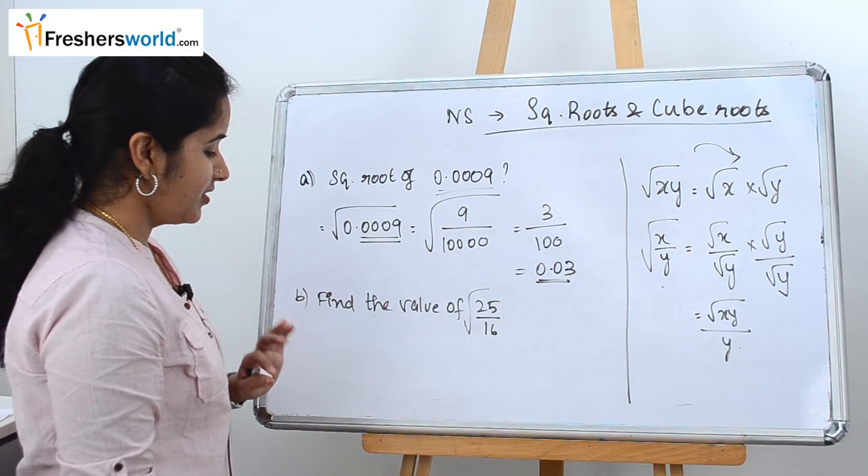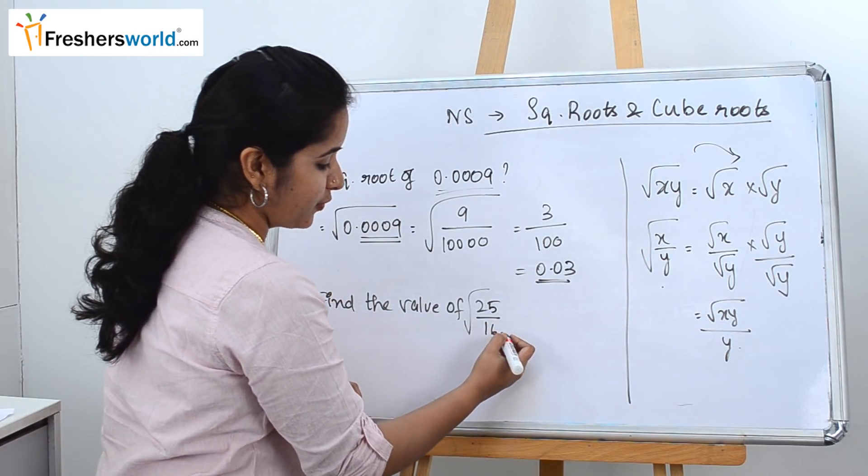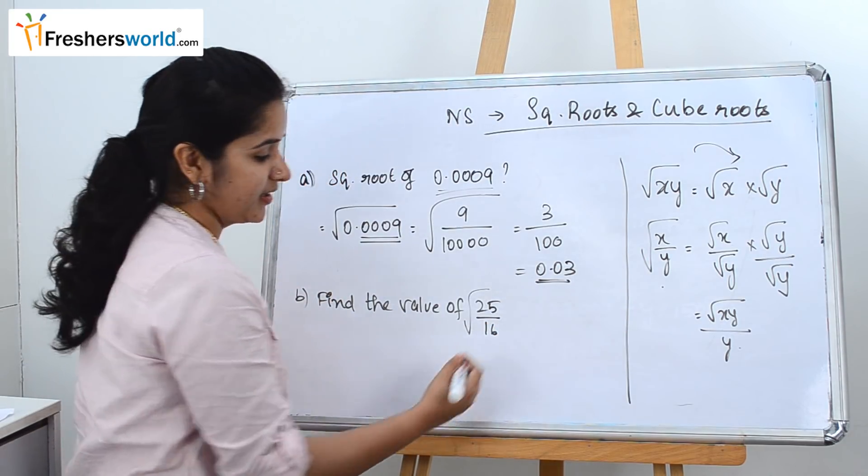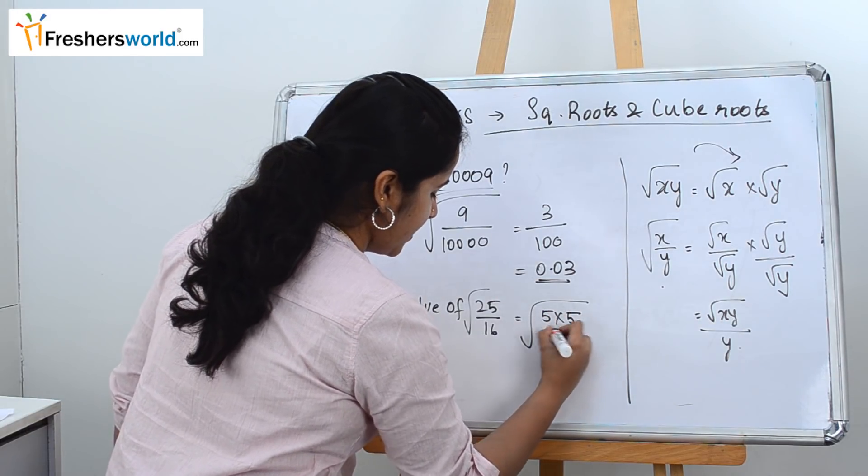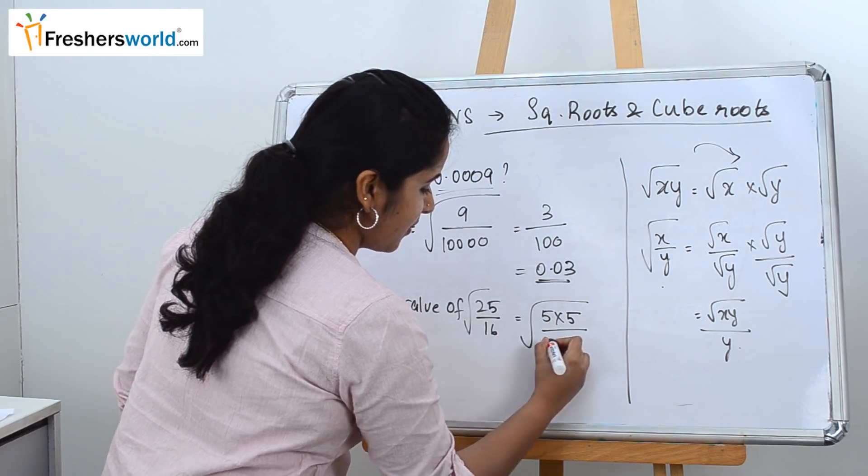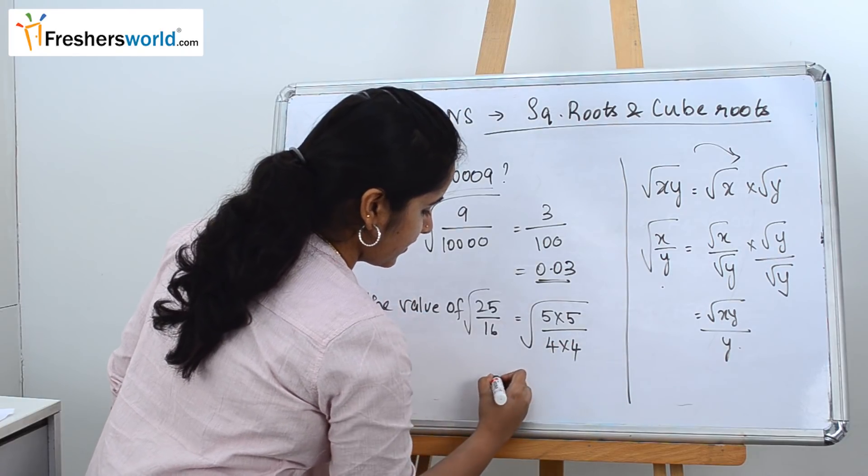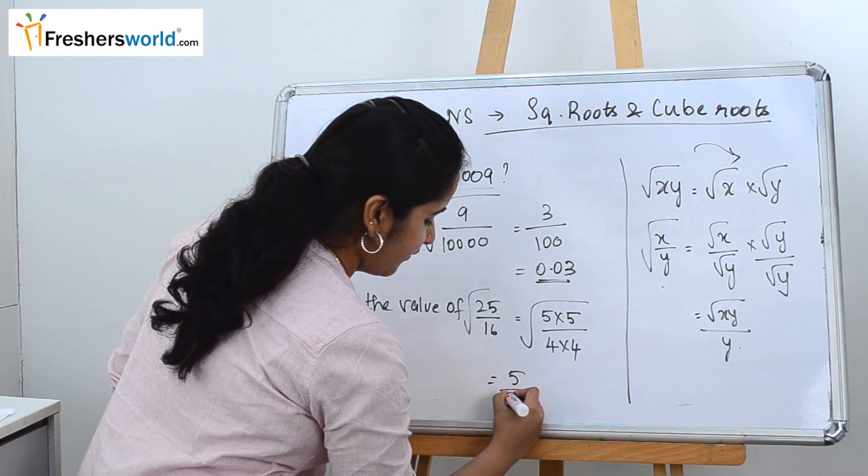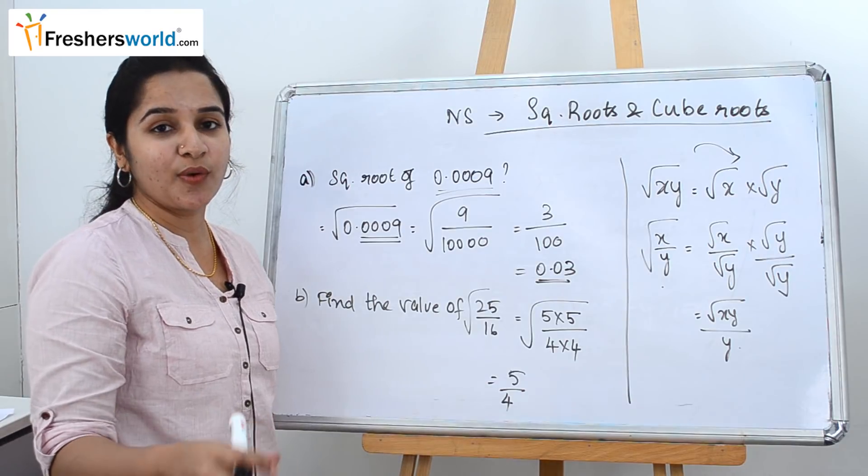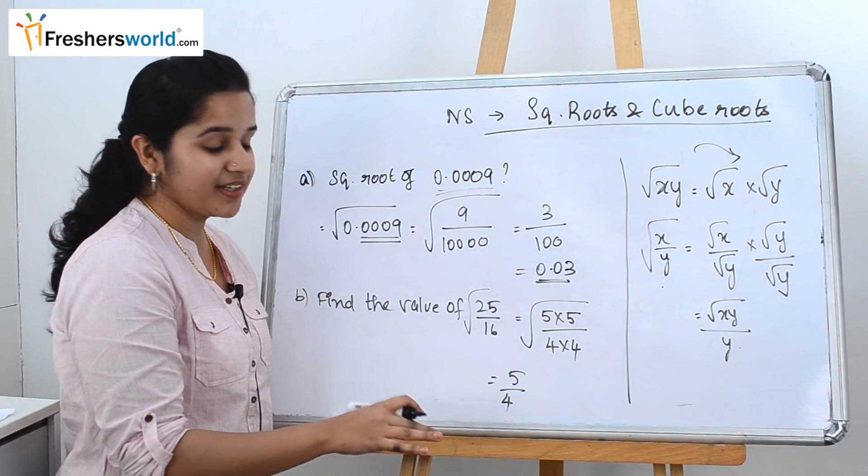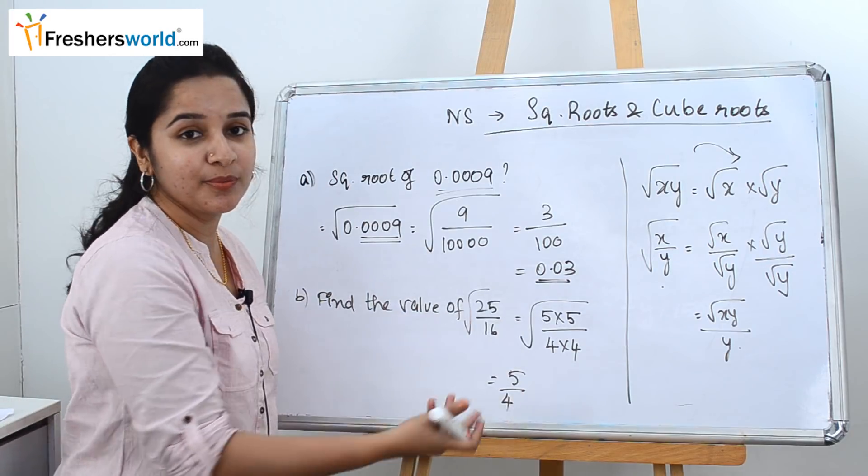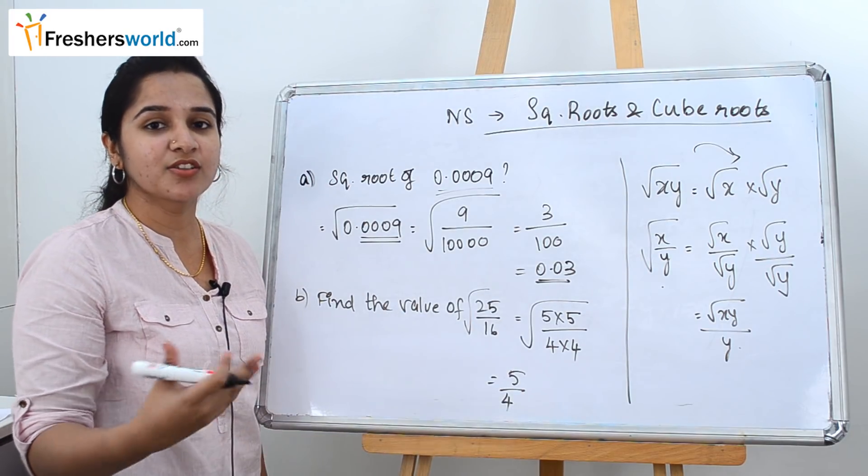So the next question: find the value of square root of 25 by 16, which can be written as 25 is nothing but 5 into 5 divided by 16, which is nothing but 4 into 4. So which is nothing but 5 by 4. If you know the square roots of the one-digit numbers thoroughly, you can see the sum and directly write it as 5 by 4. You don't have to do the middle step to waste your time. So let's go to the next question.